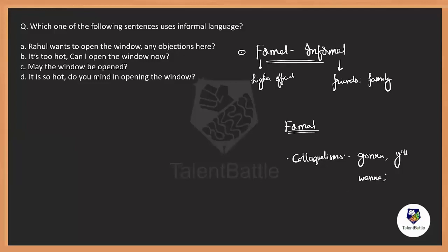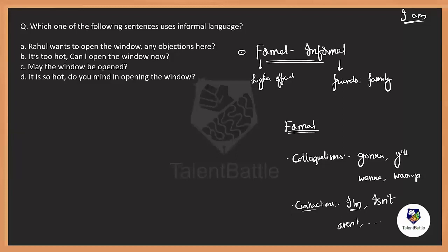When it comes to formal language, there are three things you must eliminate. The very first is colloquialisms, which are nothing but slang. For example: 'I'm gonna take the pen', or 'you wanna', or 'what's up' — all these are slang, which are colloquialisms, and you have to eliminate their usage. The second is contractions — the main aspect. What are contractions? These are short forms of general phrases. For example, 'I am' becomes 'I'm', 'is not' becomes 'isn't', 'are not' becomes 'aren't', 'should not' becomes 'shouldn't'. All these are called contractions which we have to eliminate in formal writing.